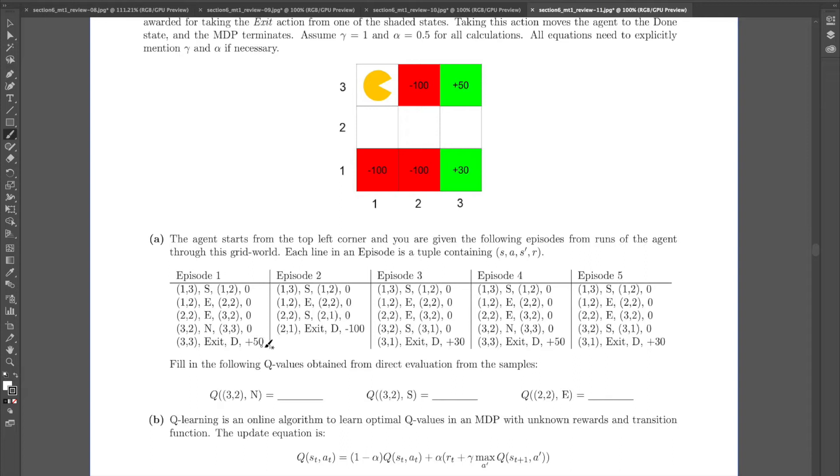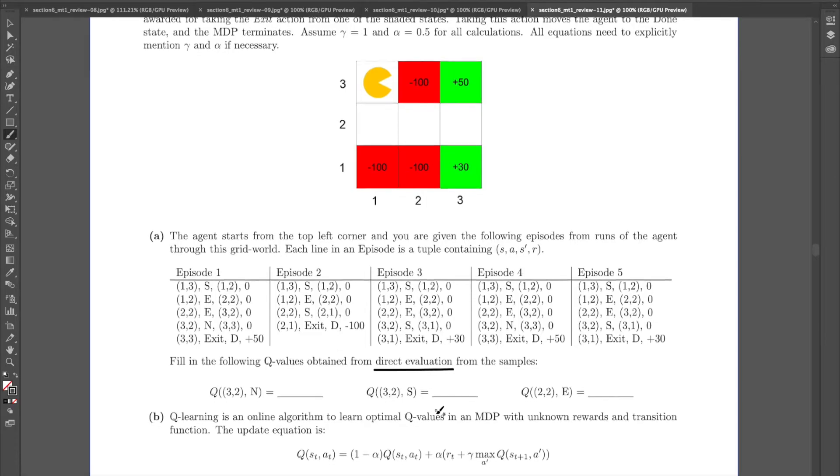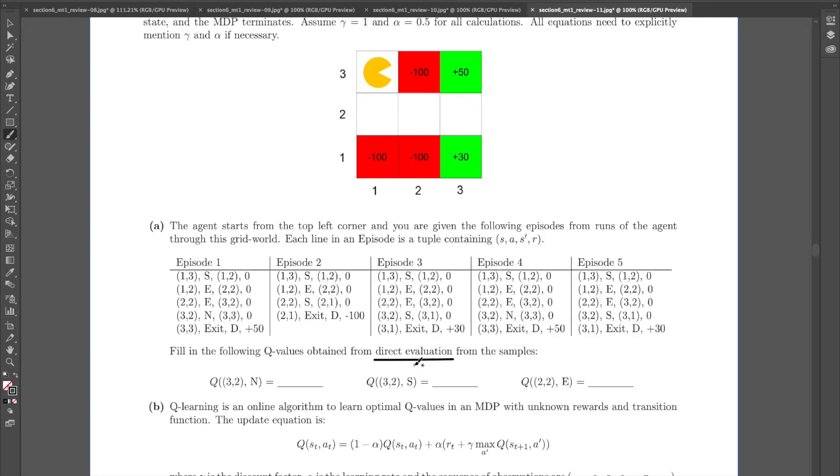And the exit is where you end up getting the reward. So part A is basically about finding estimated Q-values based on these samples that we see over here. And in particular, we can use direct evaluation in the case of part A. In the case of part B, we're going to be using Q-Learning.